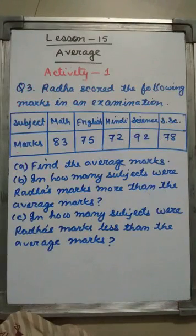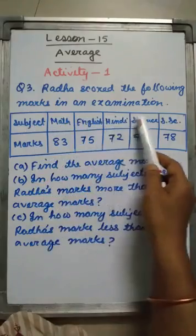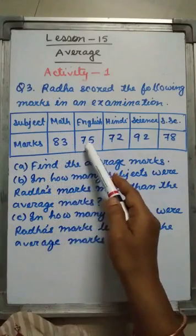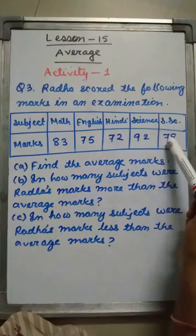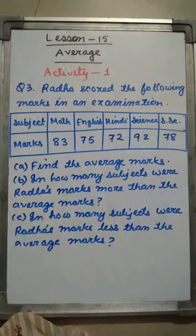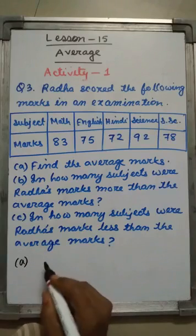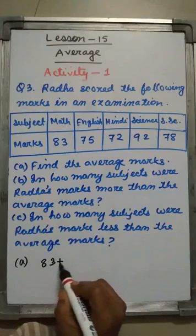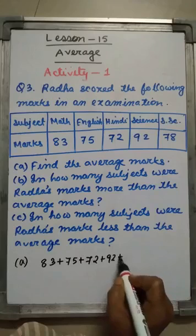Number 3 of Activity 1. Radha scored the following marks in an examination. The subjects are Maths, English, Hindi, Science, and Social Science. Marks obtained: in Maths 83, in English 75, in Hindi 72, in Science 92, and in Social Science 78. Find the average marks. For question A, I have to add all the values: 83 plus 75 plus 72 plus 92 plus 78.